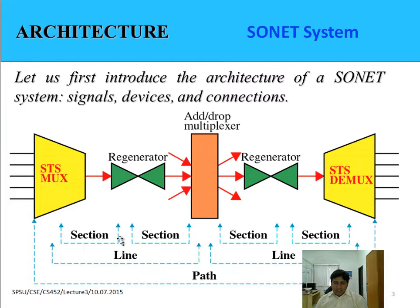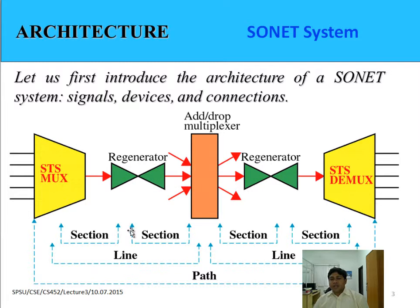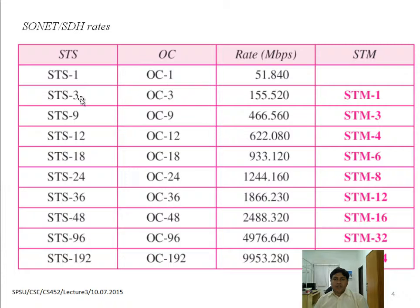There are three things in SONET: one is called section, one is called line, and one is called path. End-to-end connectivity is defined by path. Each section is defined individually, and the total connection from multiplexer to ADM and ADM to multiplexer comes under a line. These are the hierarchy of different signals and the different rates of signals in SONET.